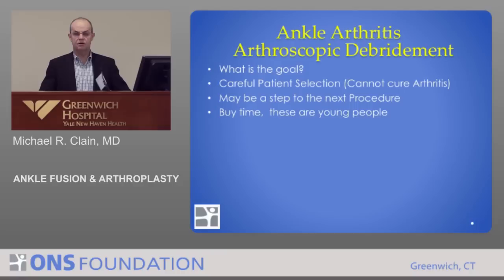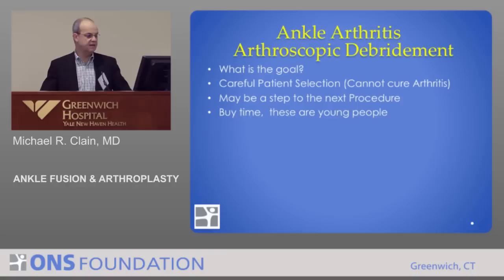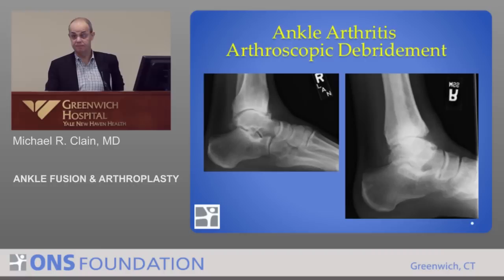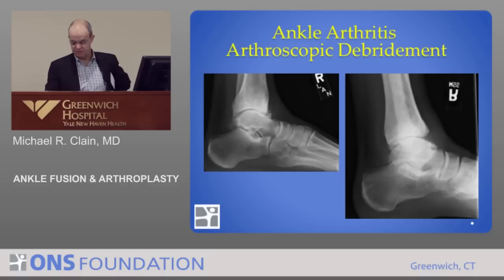The goal with arthroscopic debridement is that you cannot cure the arthritis. For a patient who has not that much arthritis but some spurs that are bothering them, sometimes you'll get lucky — but you've got to select patients carefully and you'll be wrong some of the time. The goal is to buy some time and diminish the pain. For example, a 30-year-old with a spur in the front of the joint and not-too-bad arthritis — clean it out arthroscopically and make them more comfortable. The downside is sometimes in spite of all the best planning, they don't do well and you may end up going to the next step quicker than you'd like.